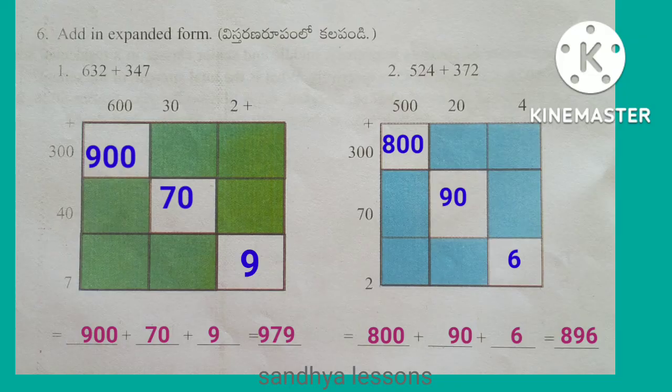Second problem: 524 plus 372. Expanded form of 524 is 500 plus 20 plus 4. Expanded form of 372 is 300 plus 70 plus 2. After adding, we get 896.